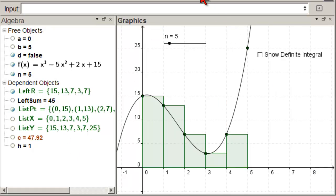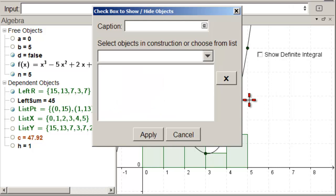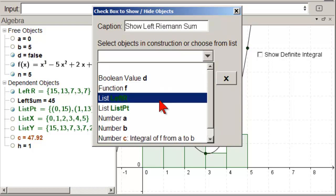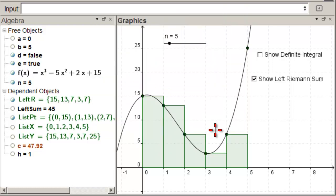Finally if we want to we can add a check box. Show left Riemann sum. And connect it to left r list so we can see those. So then we can turn off the rectangles if we want to. And show the definite integral. That is that. Bye.